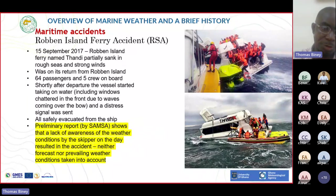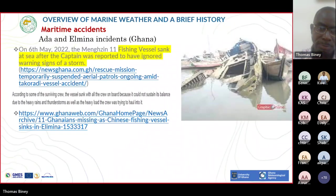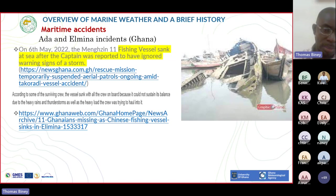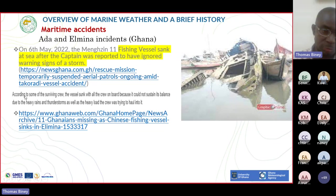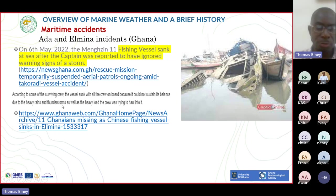In Ghana last year, a fishing vessel sank around Elmina. The report indicated that the captain ignored the warning signs of a storm. The Ghana Meteorological Agency had issued a warning indicating there would be a storm the next day, which was ignored. According to some of the surviving crew, the vessel sank because it could not sustain balance due to heavy rains and thunderstorms. If the crew and captain had heeded the advice from Ghana Meteorological Agency, the accident wouldn't have happened.